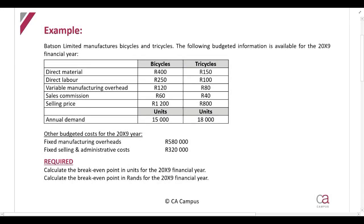In this example we are going to calculate the break-even points in units and also the break-even points in rands, where a company sells more than one product. You've been given information relating to Batson Limited, which manufactures bicycles and tricycles — two different products.